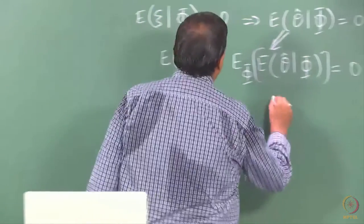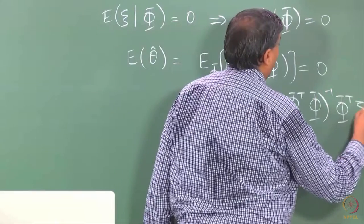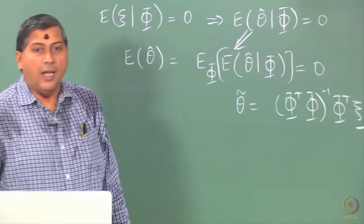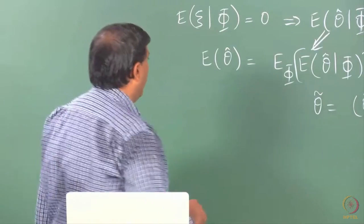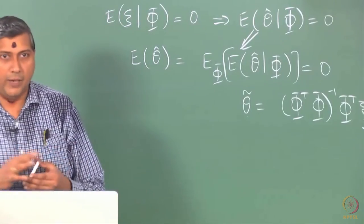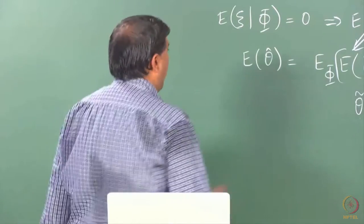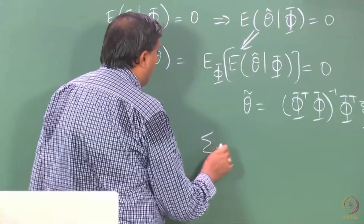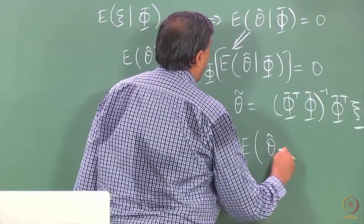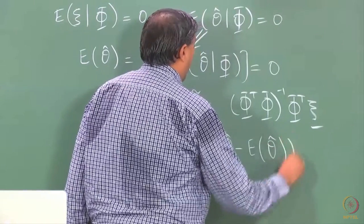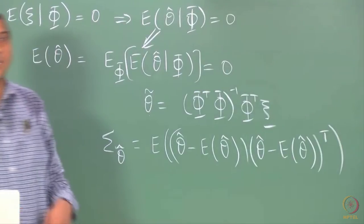The starting point is theta tilde. Unlike in the bias case, the expression for the variance is a bit more complicated. Remember, theta hat is in general a p-by-1 vector. Therefore, we cannot talk of variance alone — we talk of a covariance matrix, denoted sigma theta tilde. Sigma theta hat is the expectation of (theta hat minus E[theta hat]) times (theta hat minus E[theta hat]) transpose.